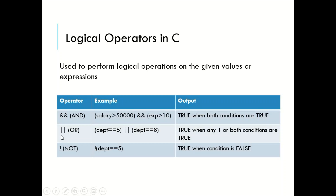Next, logical OR returns true when any one or both conditions are true. It returns false only when both the conditions are false. For example, if the department entered by the user is 8, in this case the second condition is true — department entered is 8, 8 is equal to 8 — so it returns true. If the department entered is 4, then the department is neither 5 nor 8, so in that case it is going to return false.